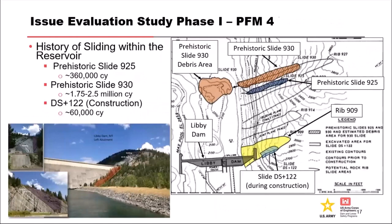There's been a history of sliding within the reservoir, which is really getting at our flaw. It's really important to understand the size of these wedges that have failed historically - they were very similar to the volume we're looking at in this failure mode, which gave us some confidence that this isn't just something we think could happen - it's actually happened before. There is a lot of uncertainty about how those failed and what initiated those - these are prehistoric slides. But there's this one here, the prehistoric slide 925 and 930. For 930, they actually have debris mapped up the other slope, so we know it failed quickly and there was a lot of volume because it ran up the other slope and is still visible.